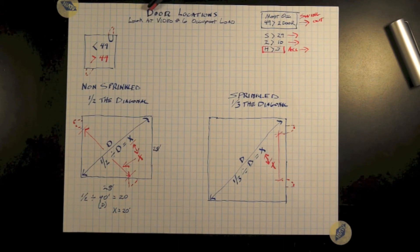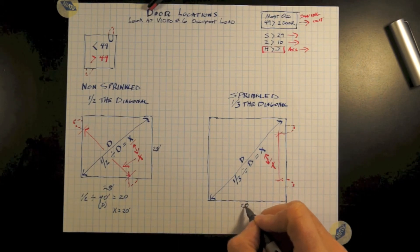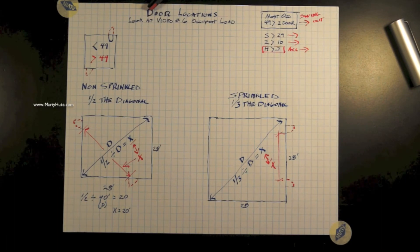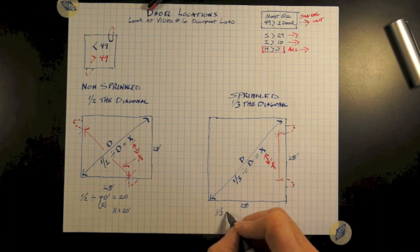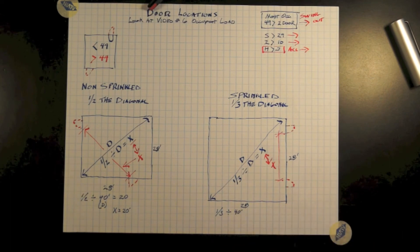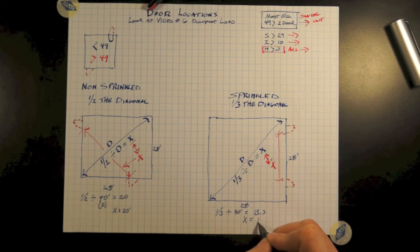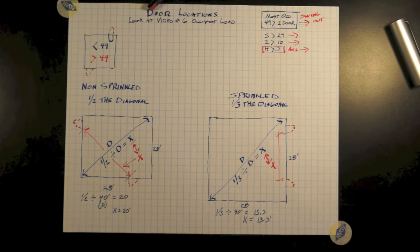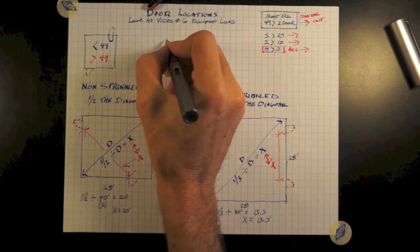On sprinkled buildings, let's take the same dimensions, 28 by 28, our diagonal distance is 40. So one third divided by 40 feet equals 13.3 feet. So therefore, our doors cannot be closer together than 13.3 feet.